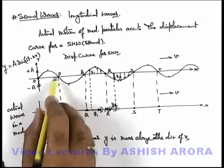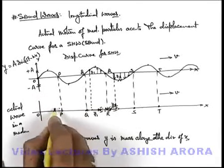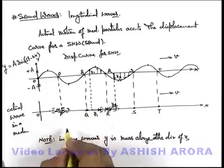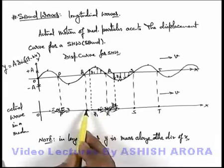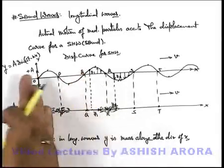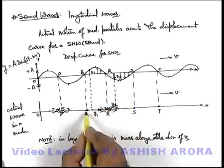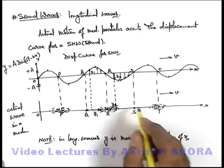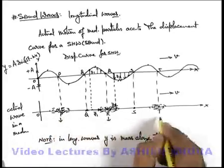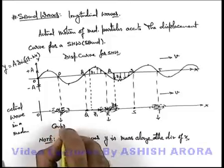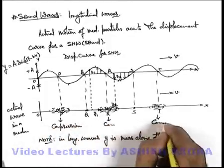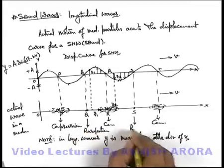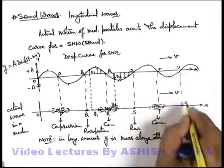Similarly, at point P — at the left of P all particles have positive displacement, meaning all these particles are located near to P. All those between P and Q are having negative displacement, so these are near to P again. So we can see for P and R the medium density will increase. But at point Q, particles on the left of Q are displaced back and particles on the right of Q are displaced toward the right, so at Q the medium density will be less. Similarly, T is the point where medium density will increase, and at point S it will decrease. So we can say P, R, T are the points where the density of the medium is more — these are called points of compressions. And the points where the medium density is less are called points of rarefaction — that would be Q, S, and U.